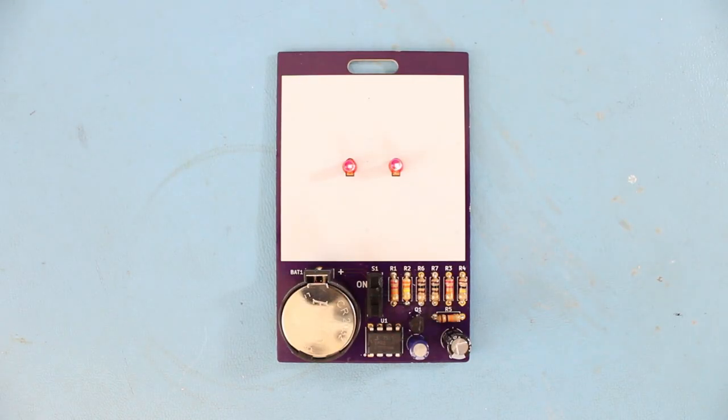And now, the moment of truth. Place your battery into the battery holder with the positive side facing up. Flip the switch and hope that nothing explodes. With some luck, you should see the LEDs slowly start to fade. Take a moment to enjoy the fruits of your labor.